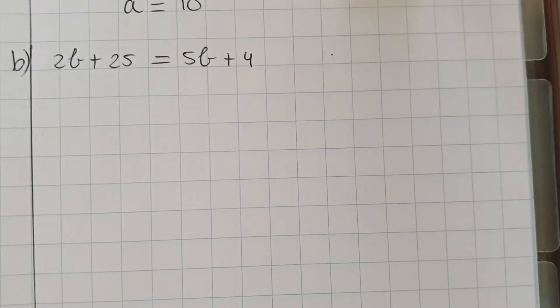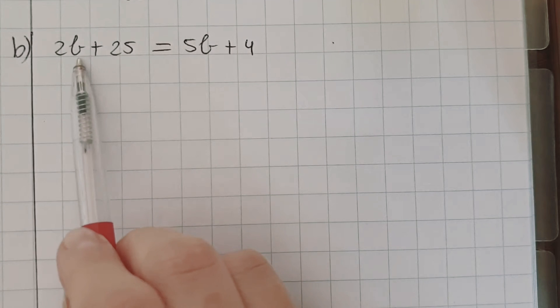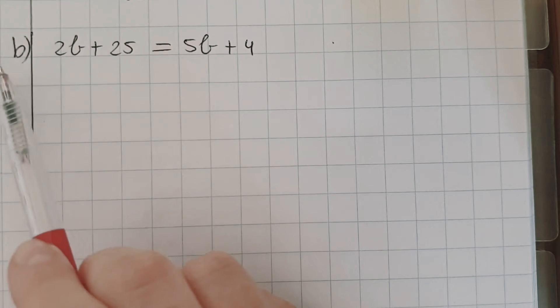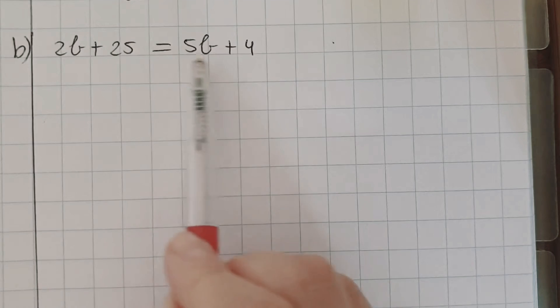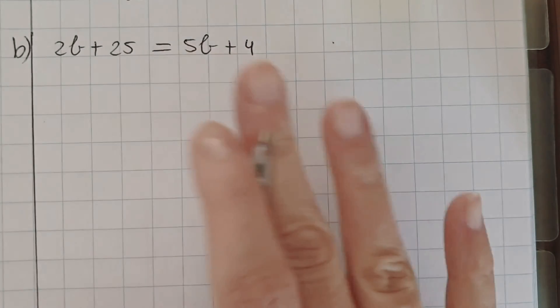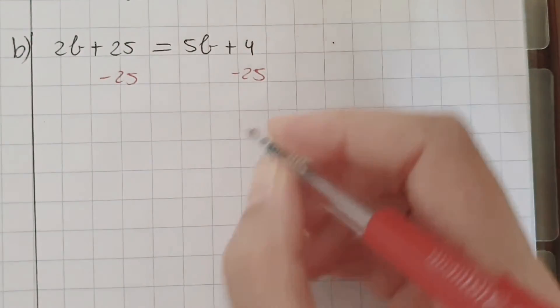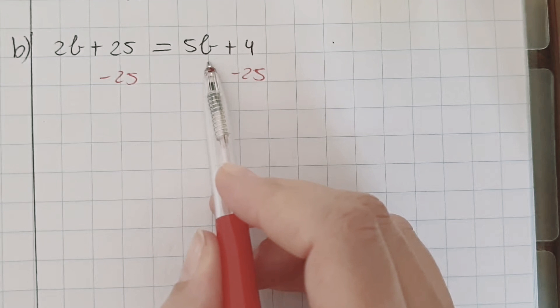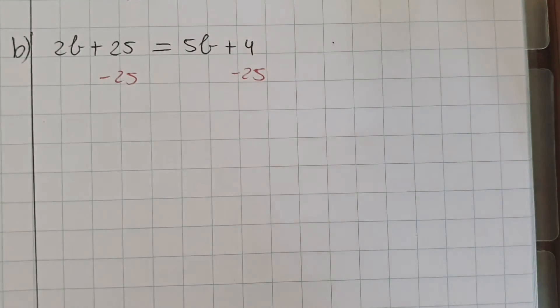Exercise B. 2b plus 25 equals 5b plus 4. When I use a b in an equation, I usually use this b instead of that one, because this one sometimes looks like a 6 in some students' handwriting. So please make sure that this is a b and not a 6. Now, all letters on this side, all numbers on this side. Minus 25. Some students ask me, can I start with minus 5b as well? And it's fine.